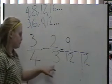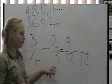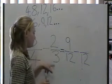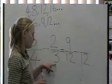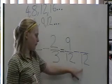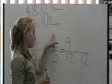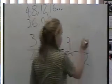And the same with the next fraction. Whatever we do to the denominator, we have to do to the numerator. So 3 became a 12 by times it by 4. So 2 times 4 is 8.